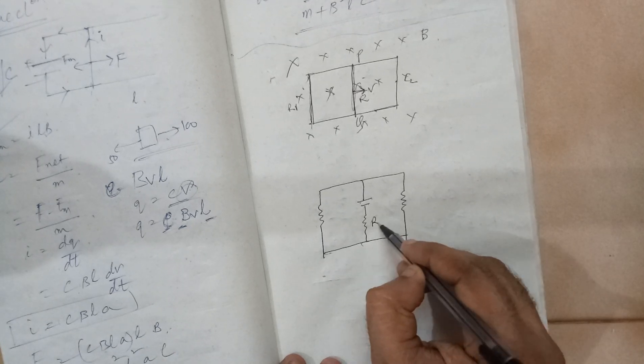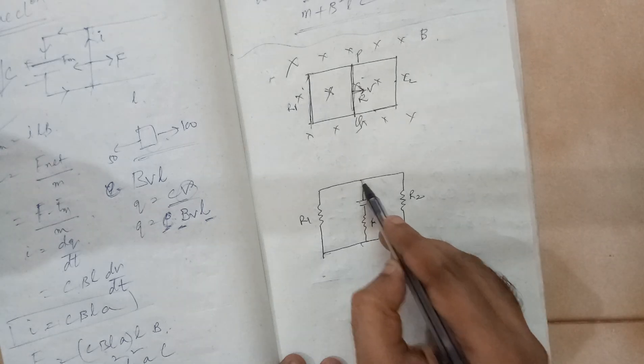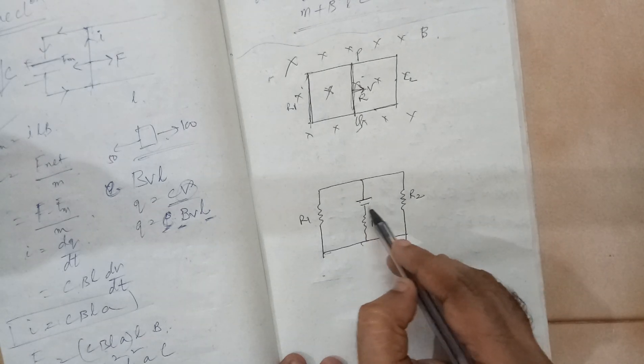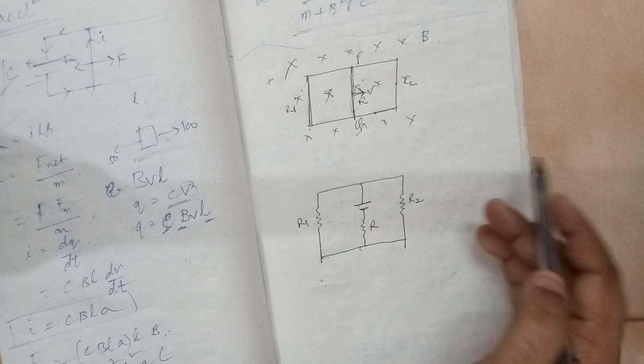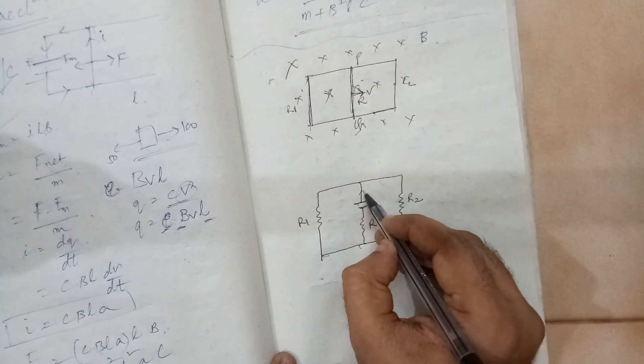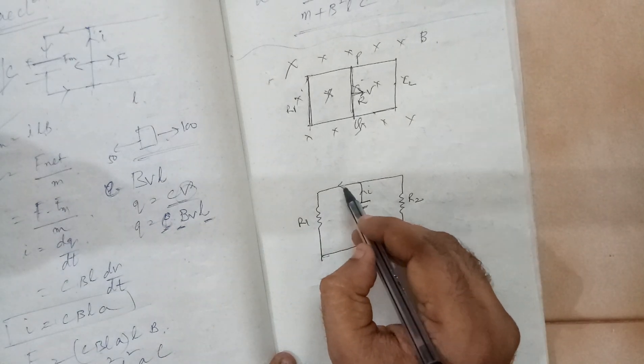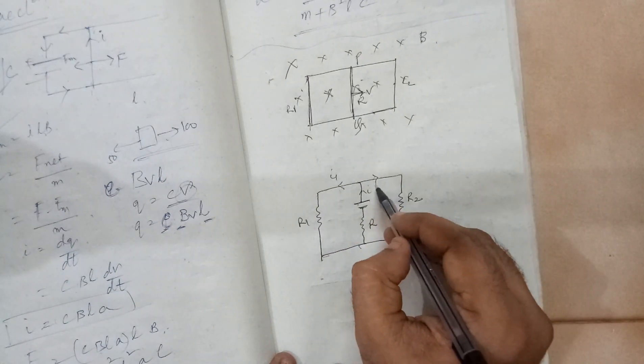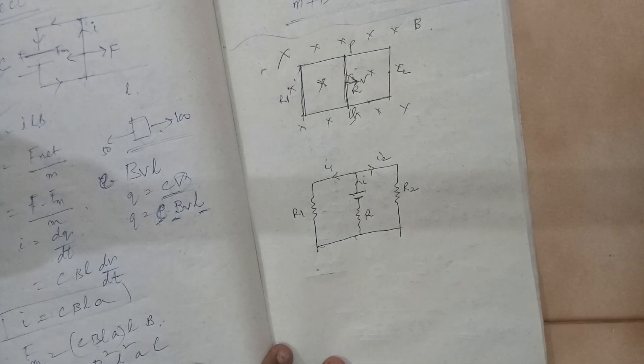This is the internal resistance, this is R1, R2. This is the higher potential, so this is the positive terminal, negative terminal. Let us say the current I is going from here. It branches out into I1 and I2. So we want to find out what is this current.